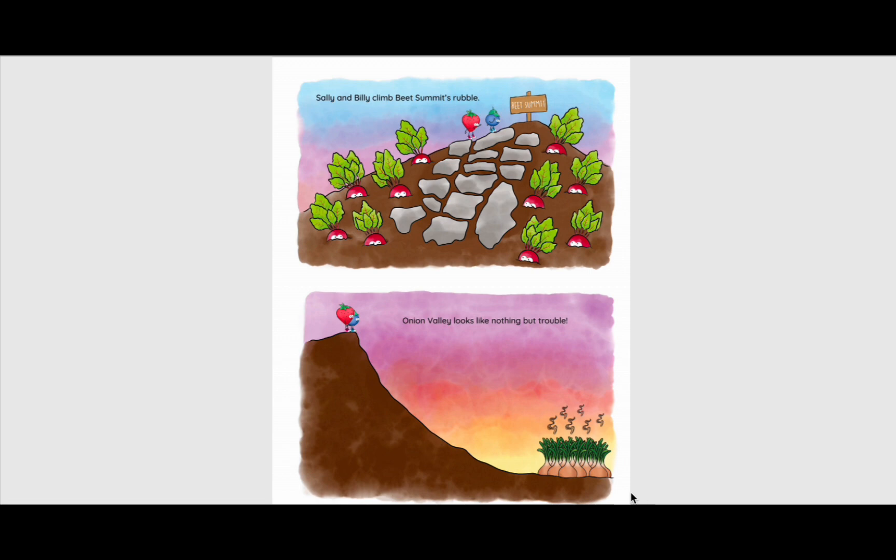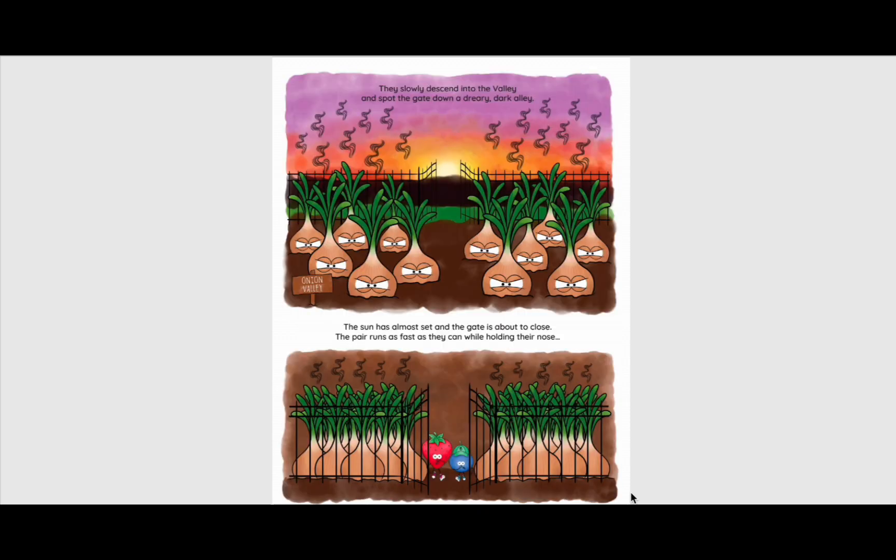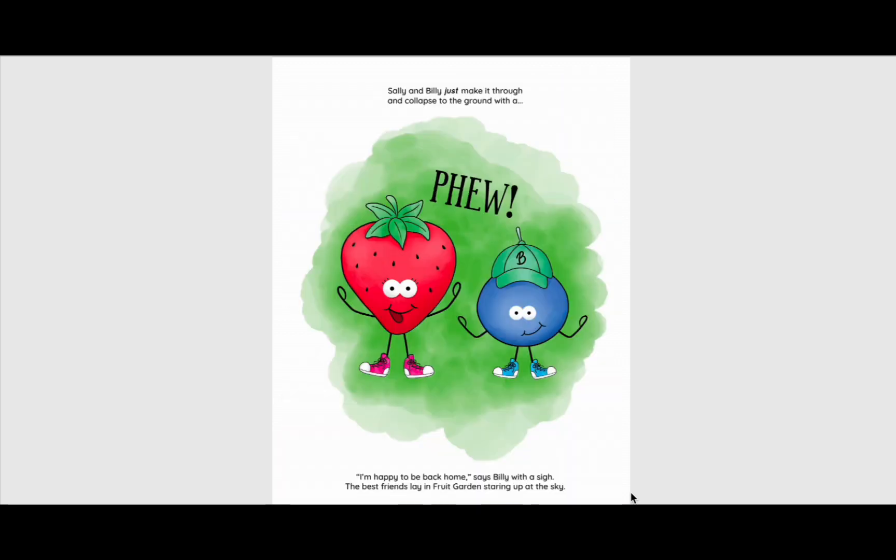Sally and Billy climb Beets Summit Rubble. Onion Valley looks like nothing but trouble. They slowly descend into the valley and spot the gate down a dreary, dark alley. The sun has almost set and the gate is all about to close. The pair runs as fast as they can while holding their nose. Sally and Billy just make it through and collapse to the ground with a phew. I'm happy to be back home, says Billy with a sigh. The best friends lay in Fruit Garden, staring up at the sky.